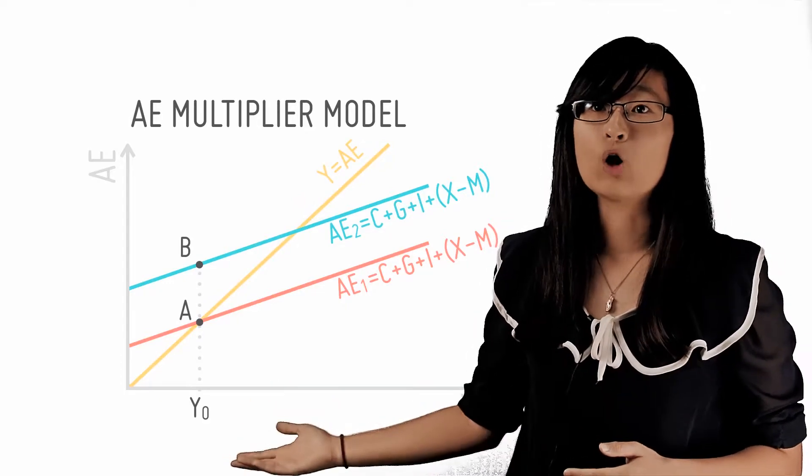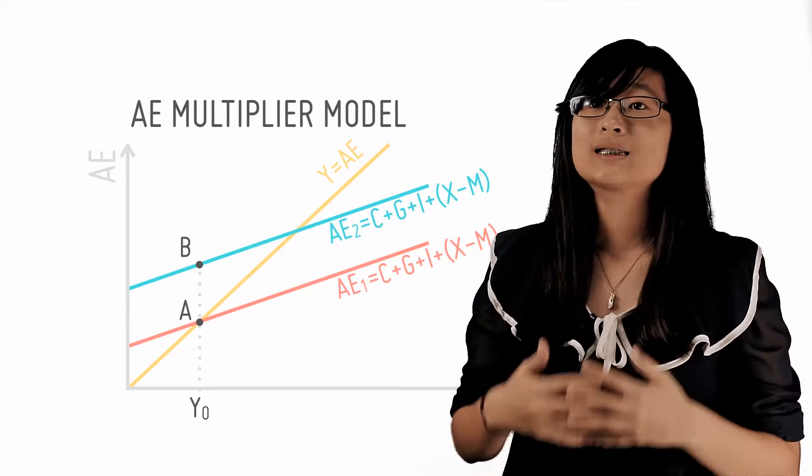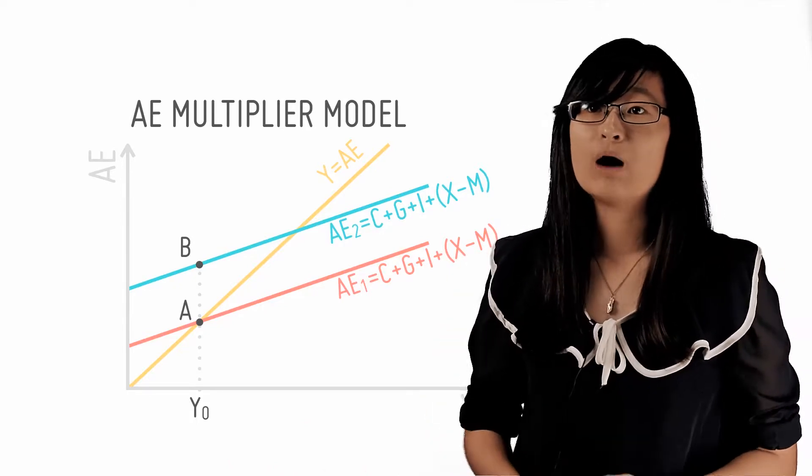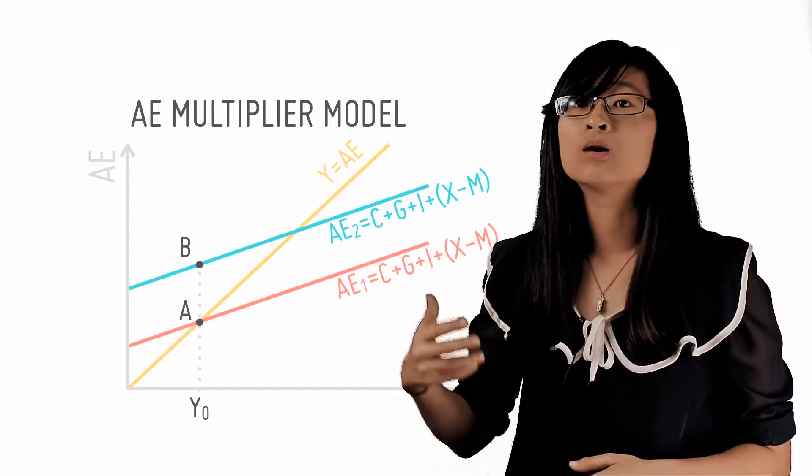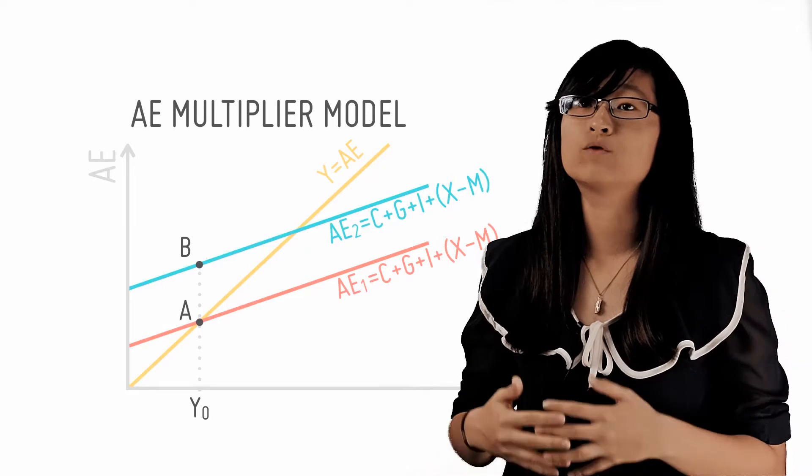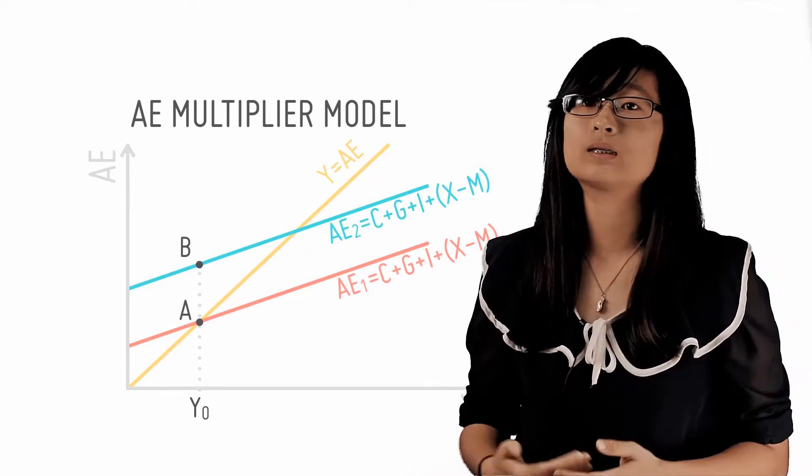At the original national output of Y0, planned AE, which is BY0, exceeds actual national output, which is the point AY0. So firms have failed to correctly anticipate demand and thus have to draw upon their stocks and spare capacities to cater to excess demand.